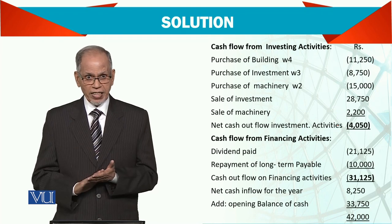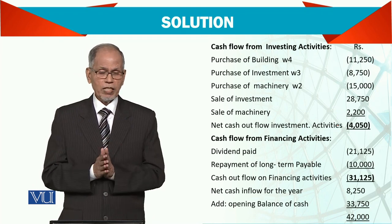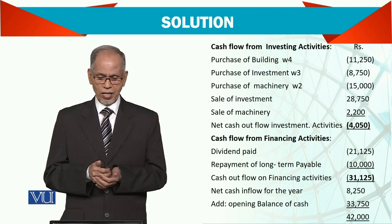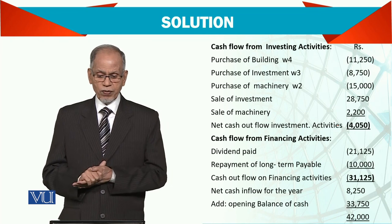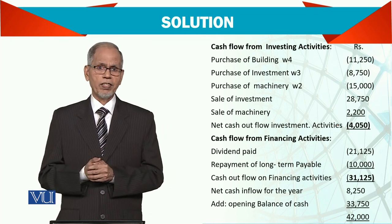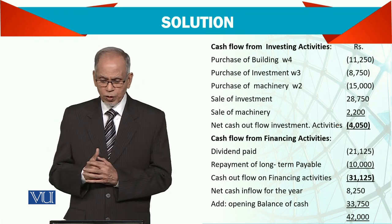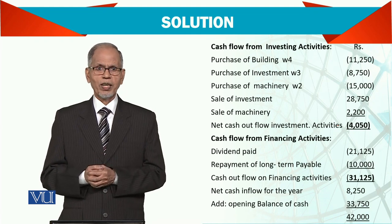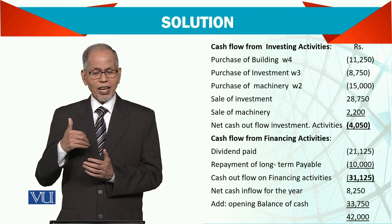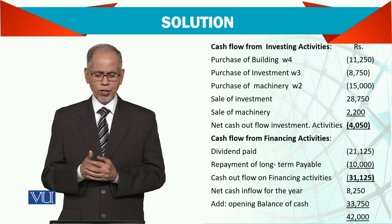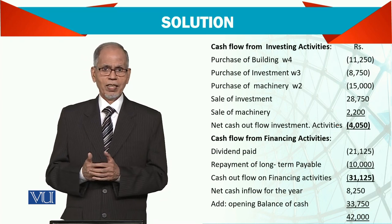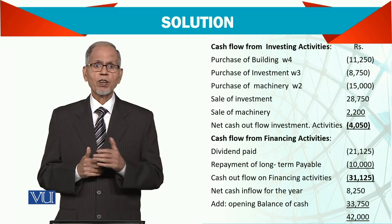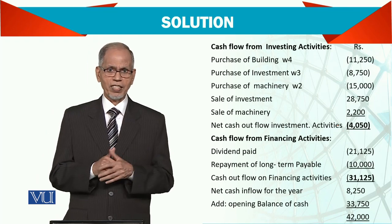In operating activity there is a positive inflow. In investing activity there is a negative outflow. Similarly, in financing activity there is also a negative outflow. But if you sum up these three figures, there is a positive net cash inflow for the year of $8,250. If you add the opening balance of cash from last year's balance sheet, you will come up with the closing balance on this year's balance sheet.